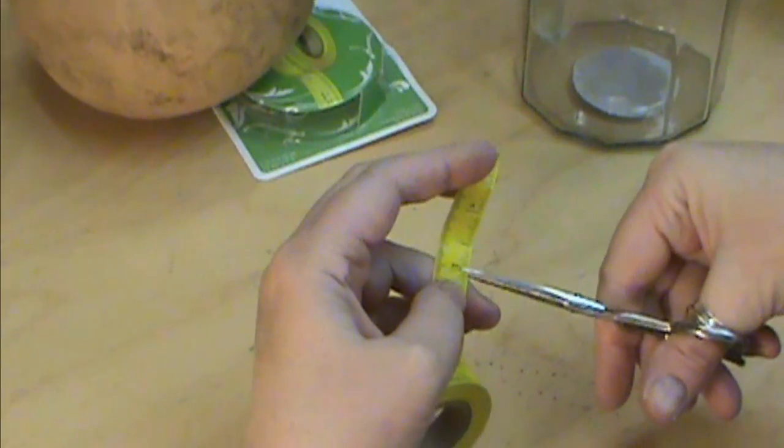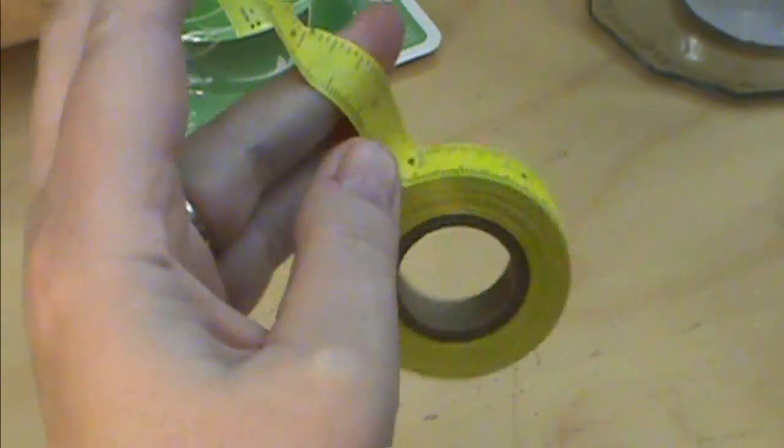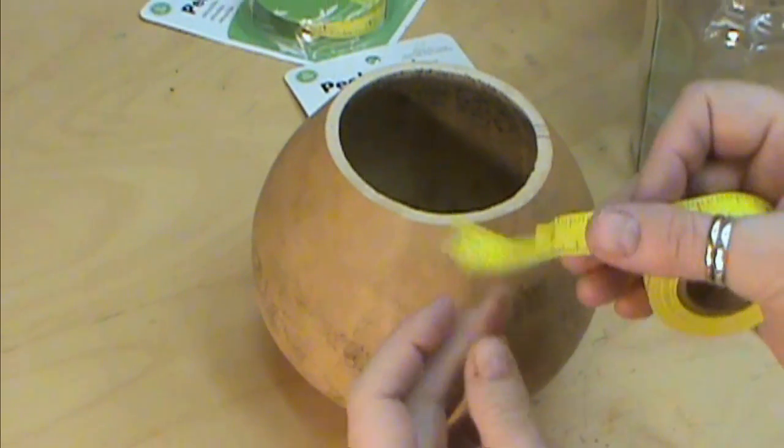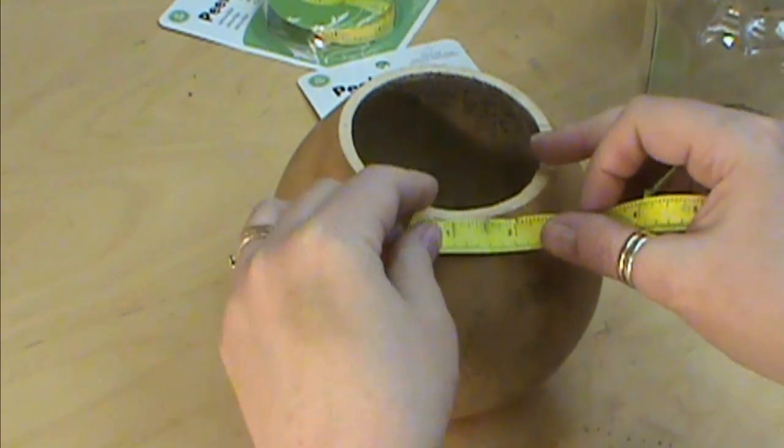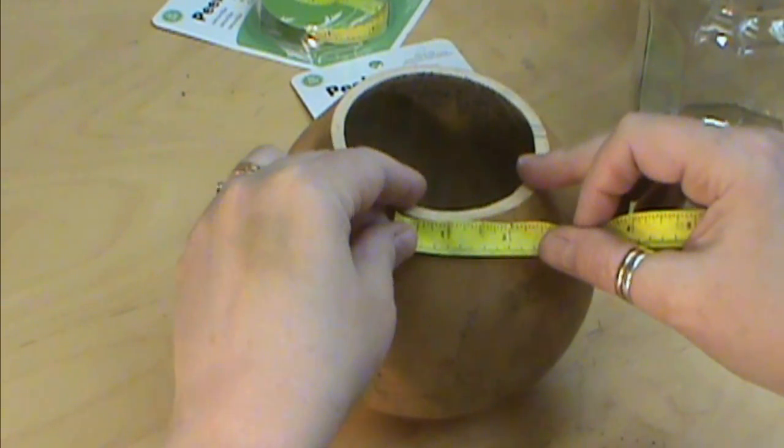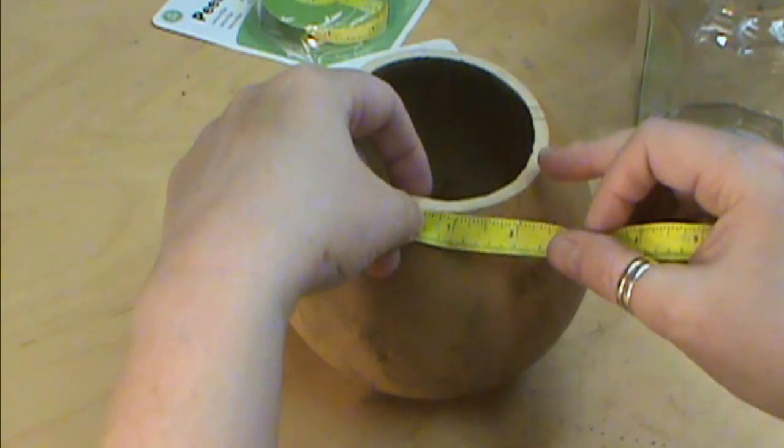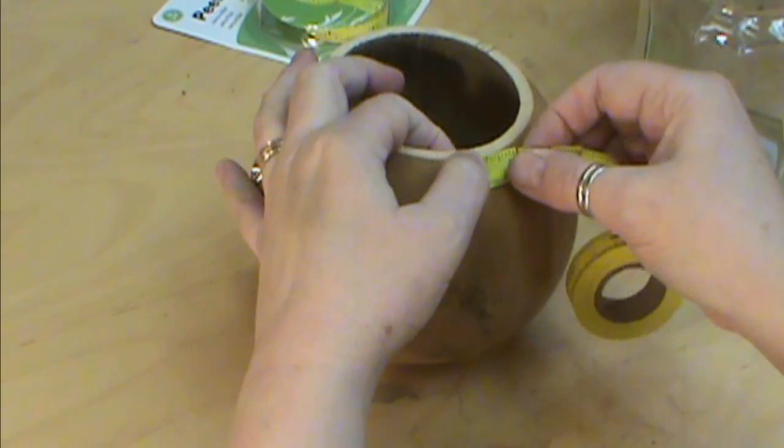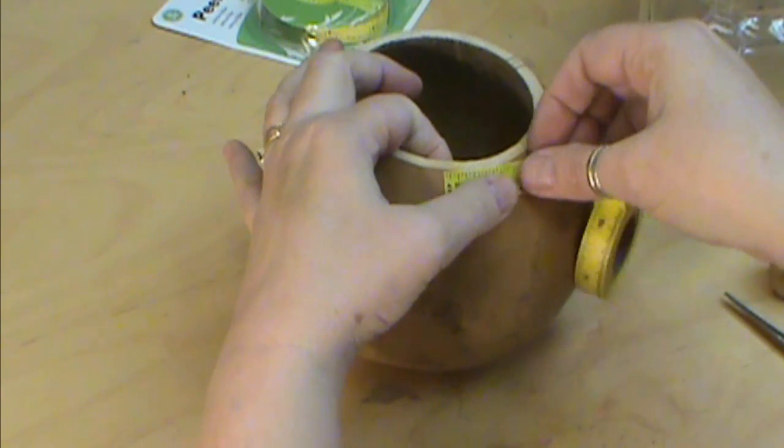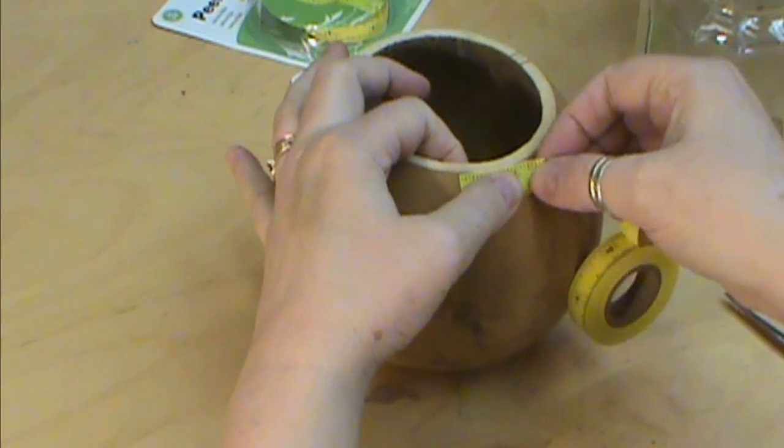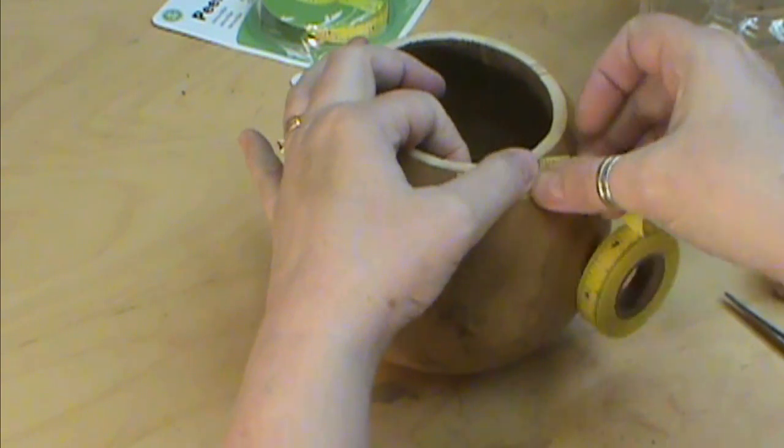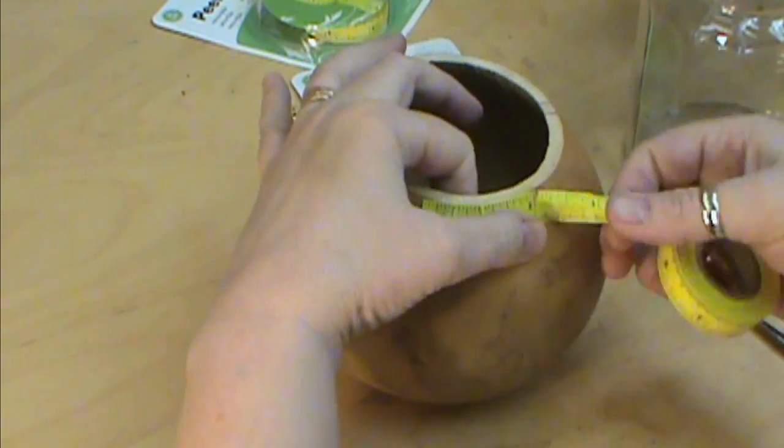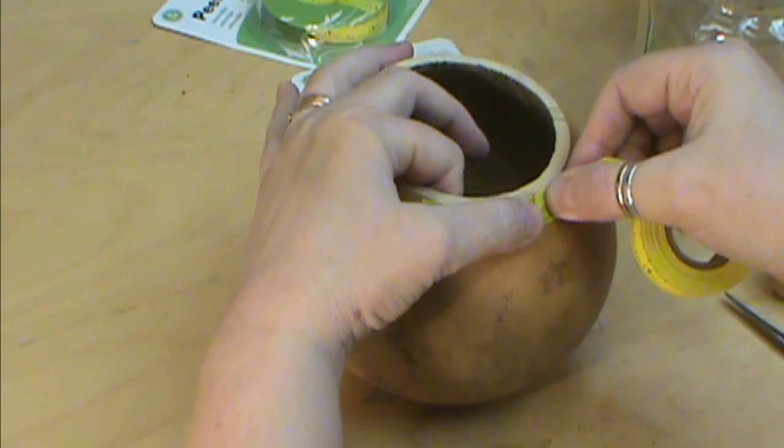I'm going to go about a fourth of the way to half of the way down the tape and see this would give me a half inch because that's how wide this is and you could even cut it if you wanted to go shorter to make it a fourth of an inch. But see now that we've cut that we just move our top part along with the top of our gourd and then we have that half inch line.